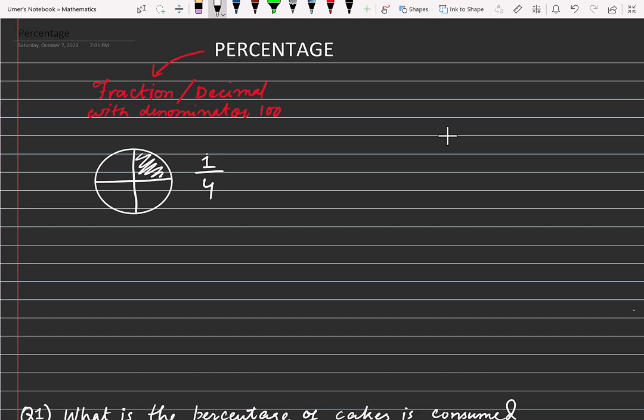And its denominator is four. But if I have to convert this same fraction into percentage, then to change it into percentage, this denominator which is 4, I need to change it into hundred.